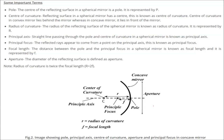Some important terms with respect to reflection: pole, principal axis, center of curvature, aperture, and principal focus. What is a pole? The center of the reflecting surface in a spherical mirror is called the pole. In this figure, P is the pole.